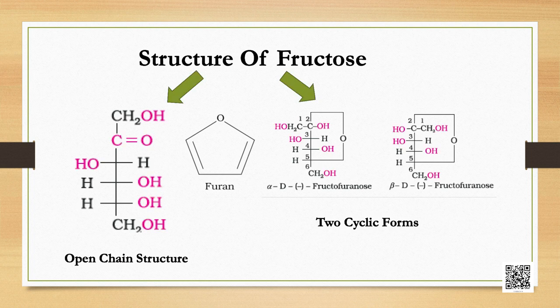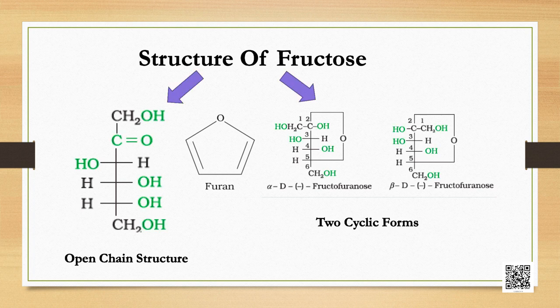Fructose is an important ketohexose obtained along with glucose by the hydrolysis of the disaccharide sucrose. It is a natural monosaccharide found in fruits, honey, and vegetables. Fructose also has the molecular formula C₆H₁₂O₆, and on the basis of its reactions it was found to contain a ketonic functional group at carbon number two and six carbons in a straight chain, as in the case of glucose. It is written as D(−)-fructose.